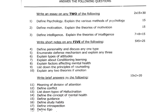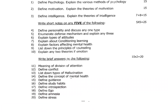Short notes: out of seven, answer any five — 5 × 5 = 25 marks. Fourth question: define personality and discuss any one type. Fifth: enumerate defense mechanisms and explain any three. Sixth: explain types of attitude. Seventh: explain conditioning and learning. Eighth: explain factors affecting mental health. Ninth: list the principles of counseling. Tenth: explain any two theories of emotion.